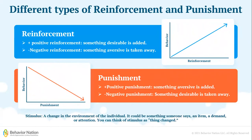With positive reinforcement, something desirable is added. If you have negative reinforcement, then something aversive is removed. In both these instances, the behavior will increase. One way you could deliver positive reinforcement is by providing your child with social praise or an item or activity that they enjoy. Negative reinforcement could be removing something that they don't like, perhaps turning off an annoying sound, or removing homework because they already finished the problems you asked them to do.